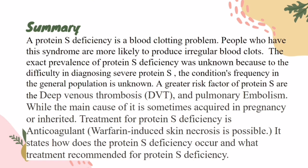In summary, protein S deficiency is a blood clotting problem. Some people who have this condition are more likely to produce irregular blood clots. The exact prevalence of protein S deficiency is unknown. The greater risk factors of protein S deficiency are recurrent venous thrombosis and pulmonary embolism.